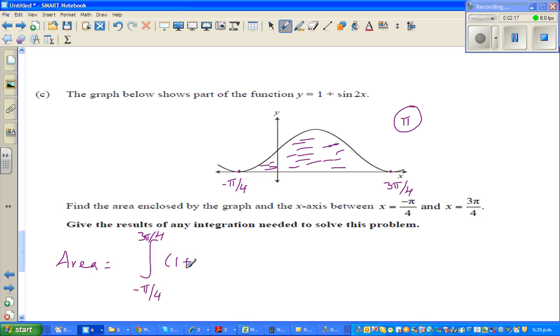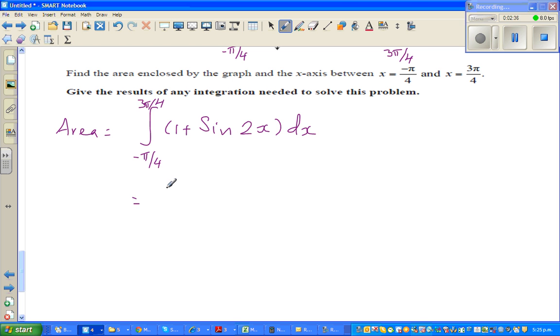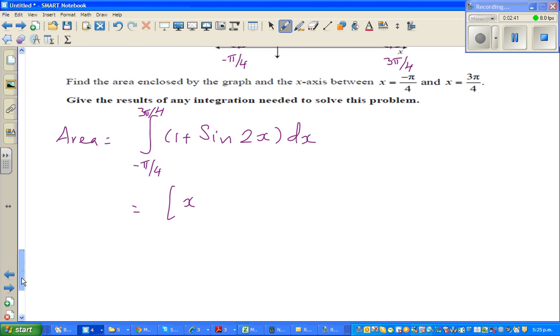So the integral from minus pi by 4 to 3 pi by 4 of 1 plus sine 2x dx. So integration of 1 is x, and integration of sine x is minus cos x.